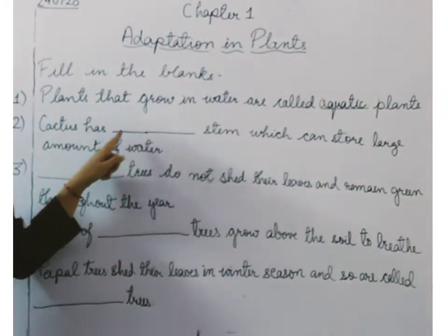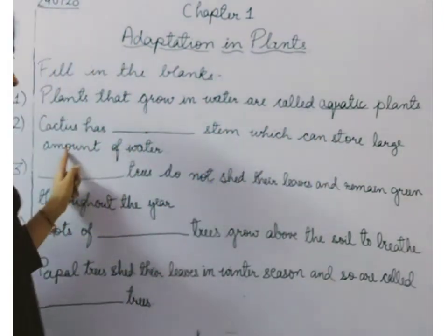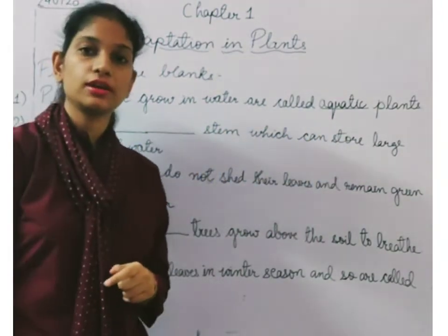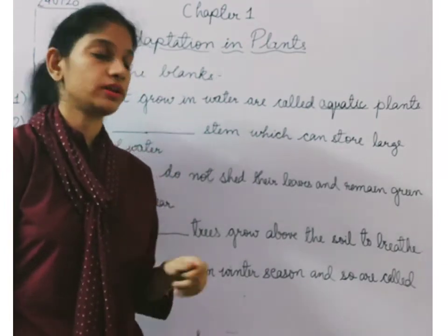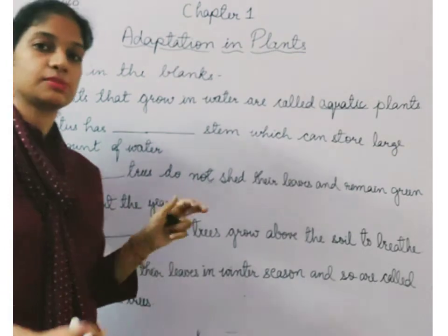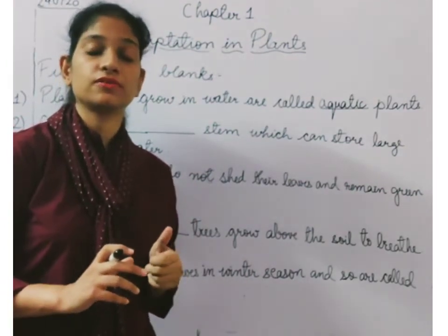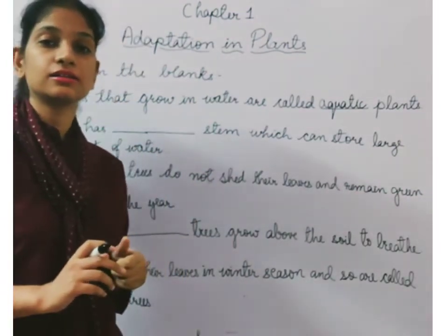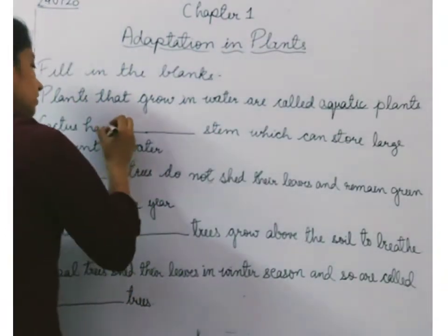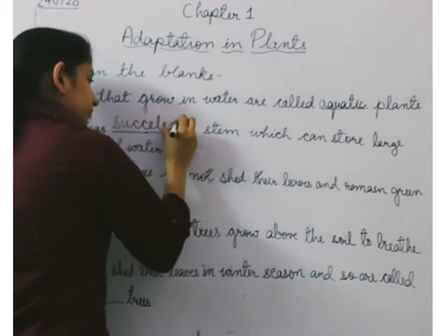Next: cactus has dash stem which can store a large amount of water. Where does the cactus grow? In the desert. So it needs to store a large amount of water. For that, it has a special type of stem. Which stem is that? It's the succulent stem. If you have said succulent, then you are correct — it's the succulent stem.